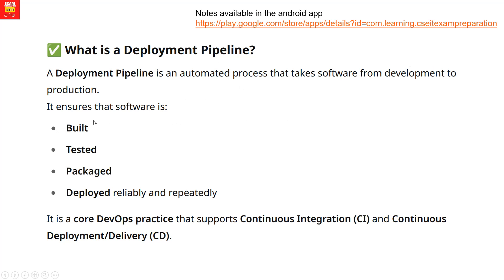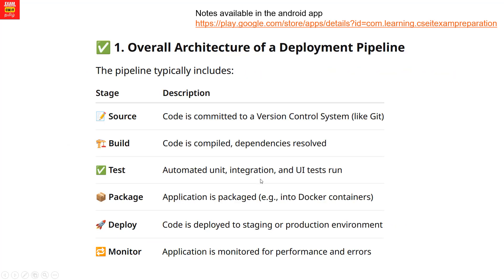It is an automated process: build, test, package, and deploy. Deploy includes continuous monitoring. In practice, this is the CI/CD Pipeline — Continuous Integration and Continuous Deployment or Delivery.